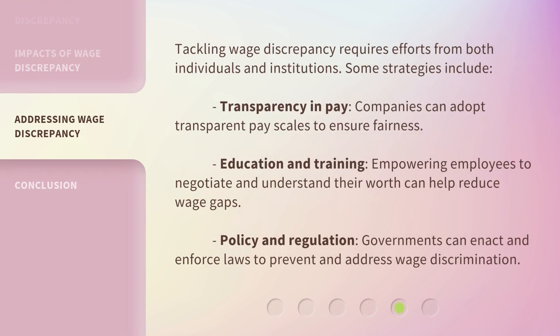Tackling wage discrepancy requires efforts from both individuals and institutions. Some strategies include transparency in pay — companies can adopt transparent pay scales to ensure fairness. Education and training: empowering employees to negotiate and understand their worth can help reduce wage gaps. Policy and regulation: governments can enact and enforce laws to prevent and address wage discrimination.